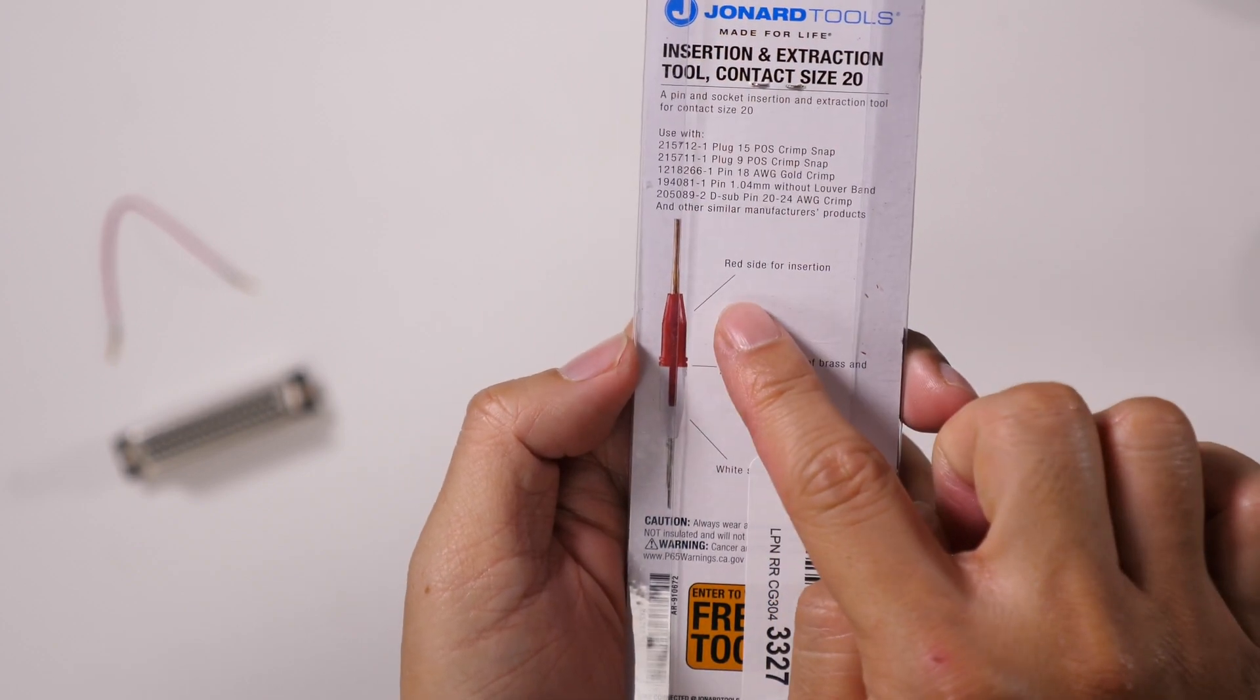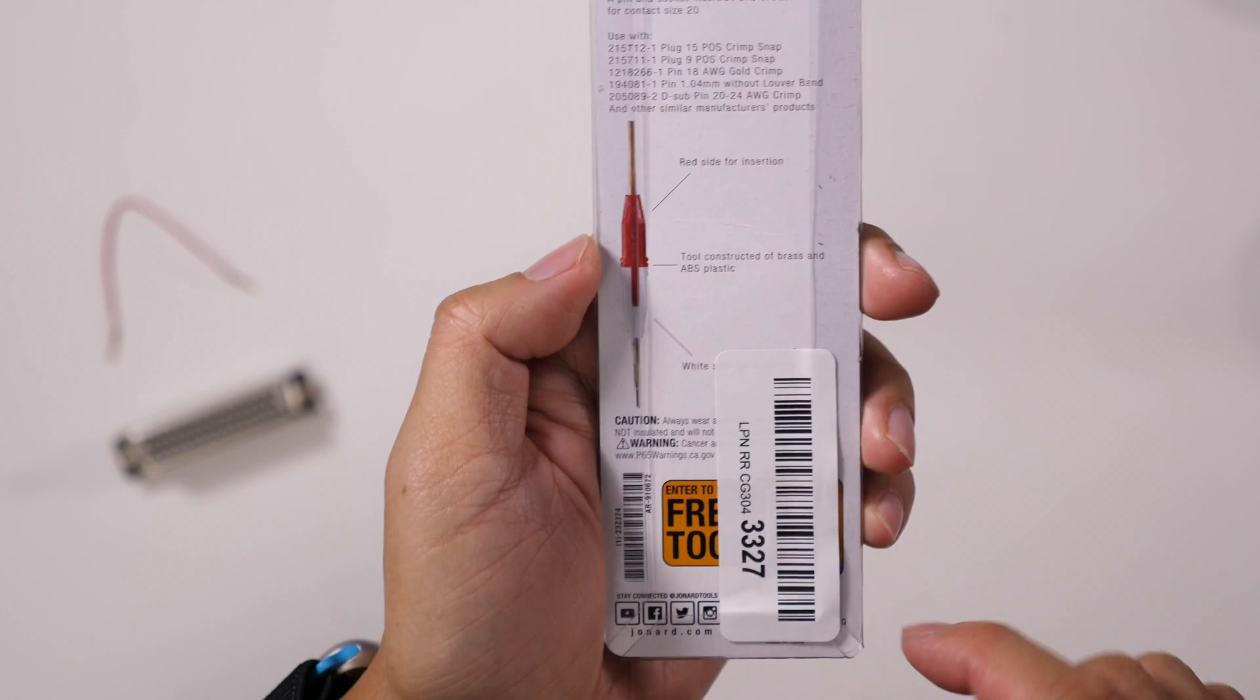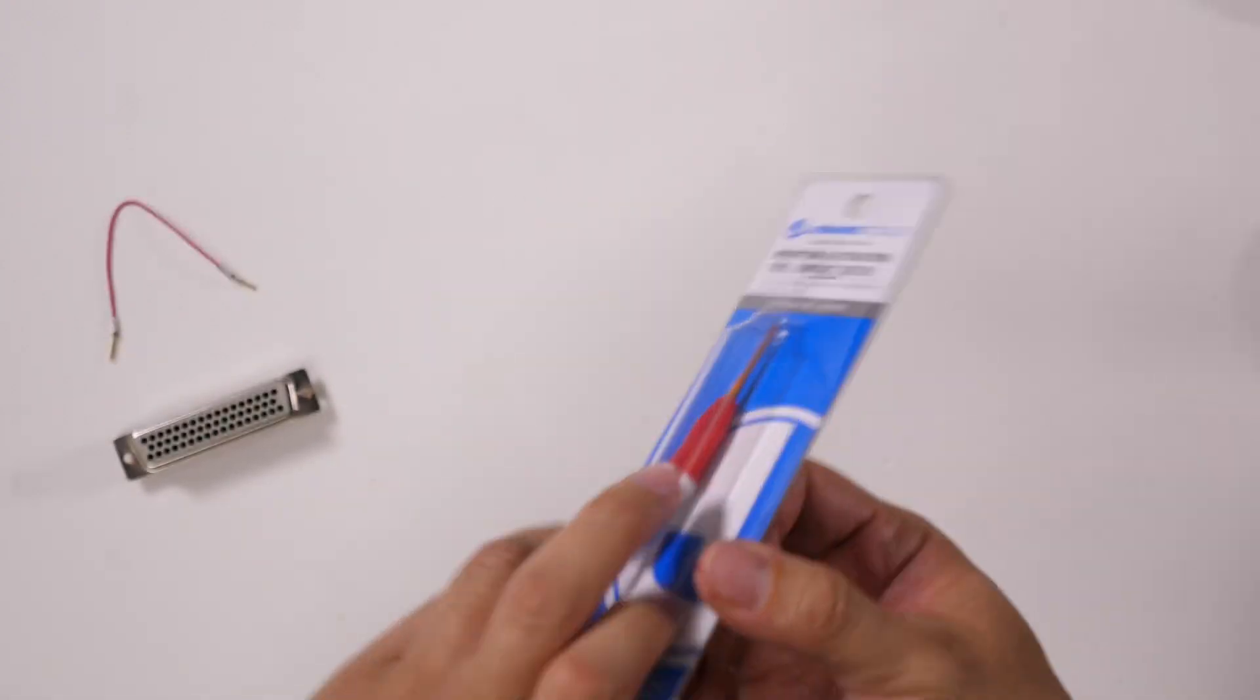So the red side is for insertion, the white side is for extraction. Okay, let's open this up.